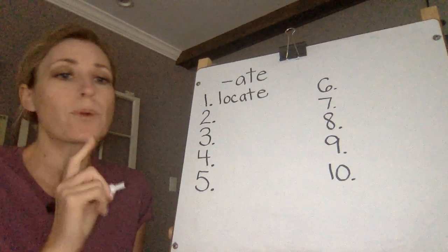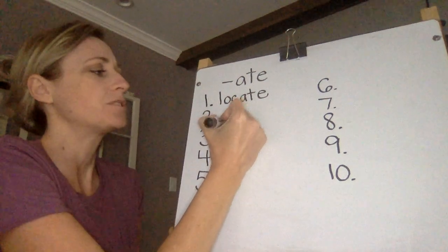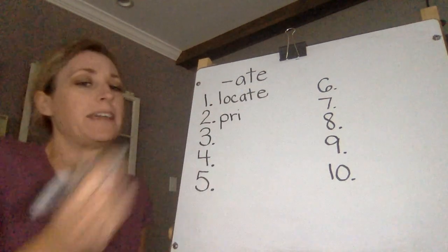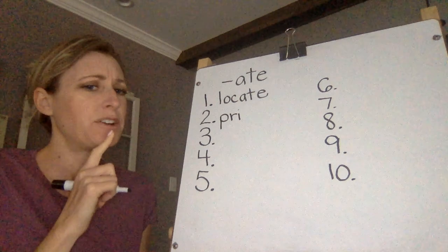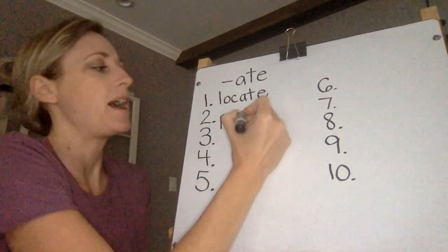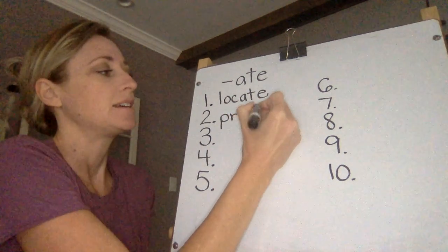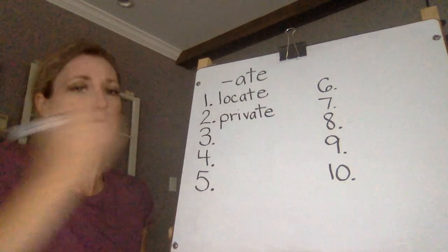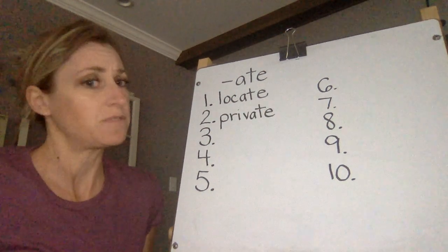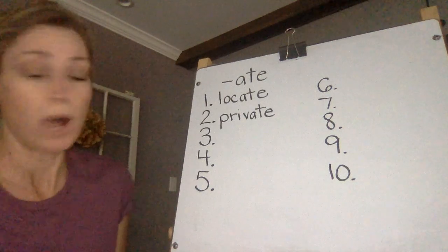Number two, pry is the first syllable. Pri-vet. I'm not hearing private. Pri-vet. It's making, it sounds like the short E sound. So it's being lazy. It's making that schwa sound.